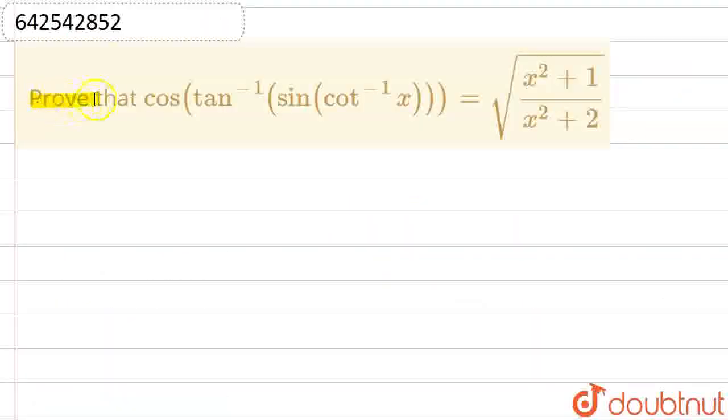In this question, we have to prove that cos of tan inverse of sin of cot inverse x is equal to square root of x squared plus 1 upon x squared plus 2.